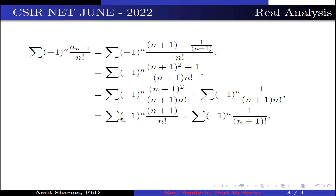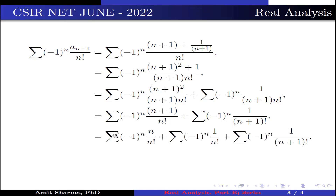Therefore, it becomes summation (-1)^n · (n+1) divided by n!, plus summation (-1)^n · 1 divided by (n+1)!. Again separating these two terms, we get summation (-1)^n · n/n!, plus summation (-1)^n · 1/n!, plus summation (-1)^n · 1/(n+1)!.